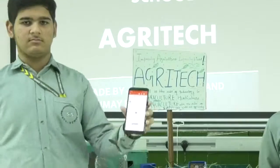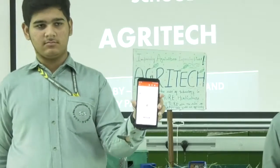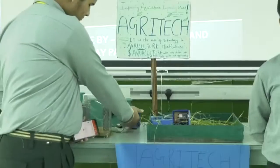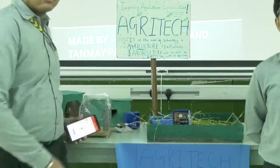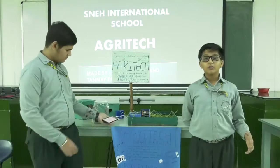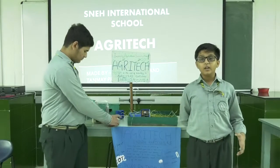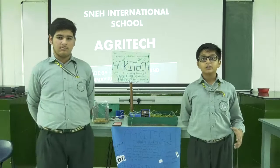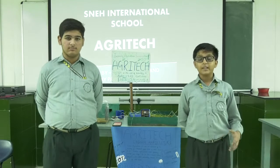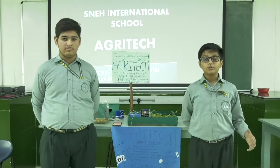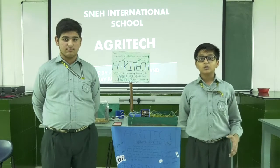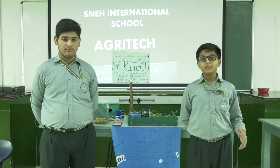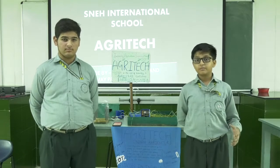We have also used a water pump connected to a relay switch, and the relay switch is further controlled by a microcontroller. A trigger has also been set so that the farmer will be informed whether the water pump is running or not by receiving a message on his phone. We have also tried to demonstrate drip irrigation.